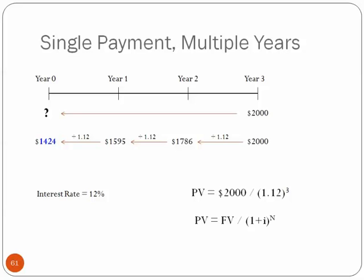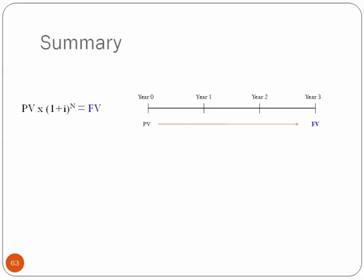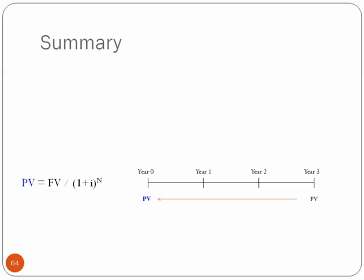It's the exact same methodology. So just to summarize this, the main equation is this present value times 1 plus i to the n equals the future value. And we can do it going forwards, or we can rearrange this same equation and divide by 1 plus i to the n to go backwards. And here they are side by side.